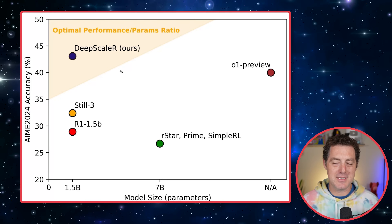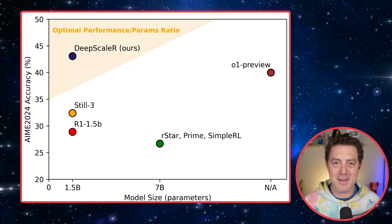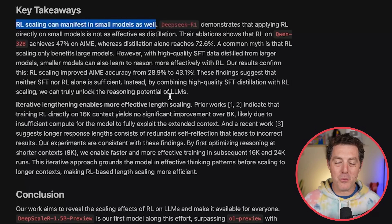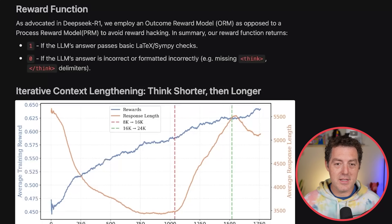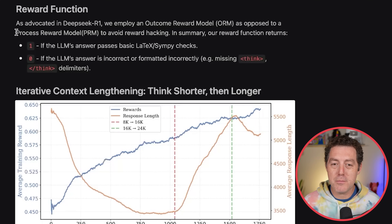I'm telling you, we are in the era of tiny models. They continue to prove that reinforcement learning, even on small models, can reap enormous rewards. Interestingly, the reward function they used is an outcome reward model as opposed to the process reward model.